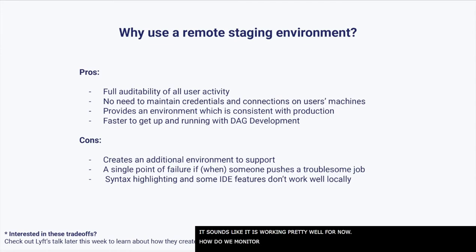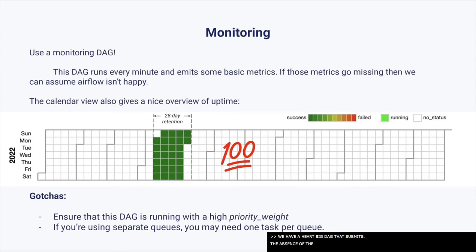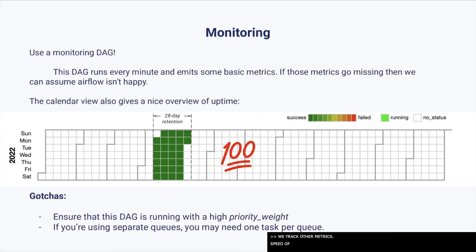In all three environments, we have a heartbeat DAG that runs every minute and emits some metrics. This DAG has a high priority and ensures it runs even when the Airflow environment is busy. The absence of this DAG will trigger an alert for the data platform team to investigate the outage. We also have a Datadog dashboard that provides metrics to indicate the health of the Airflow scheduler and workers. We also track task start latency, file parsing performance, the speed of our file synchronization process, and the amount of time schedulers are spending in the critical section.